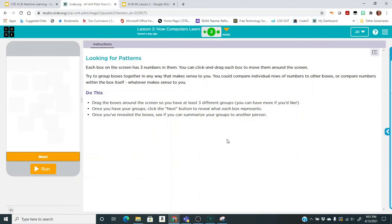Each box that you're going to see when you run the code has three numbers in them. You can click and drag each box to move them around the screen. Try to group boxes together in any way that makes sense to you. You can compare individual rows of numbers to other boxes or compare numbers within the box itself. Whatever makes sense to you. And then after you drag the boxes around the screen, so you have at least three different groups. You can have more groups than three if you'd like.